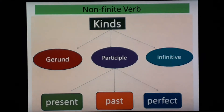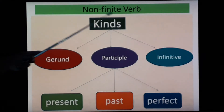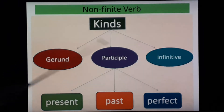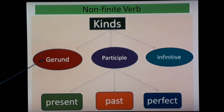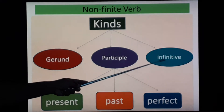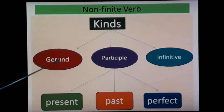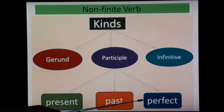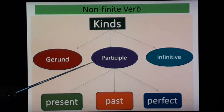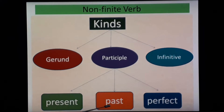Let's see the types of non-finite verbs. There are three kinds: gerund, participle, and infinitive. Under participle, you will get three more types: present participle, past participle, and perfect participle. We will see each one.